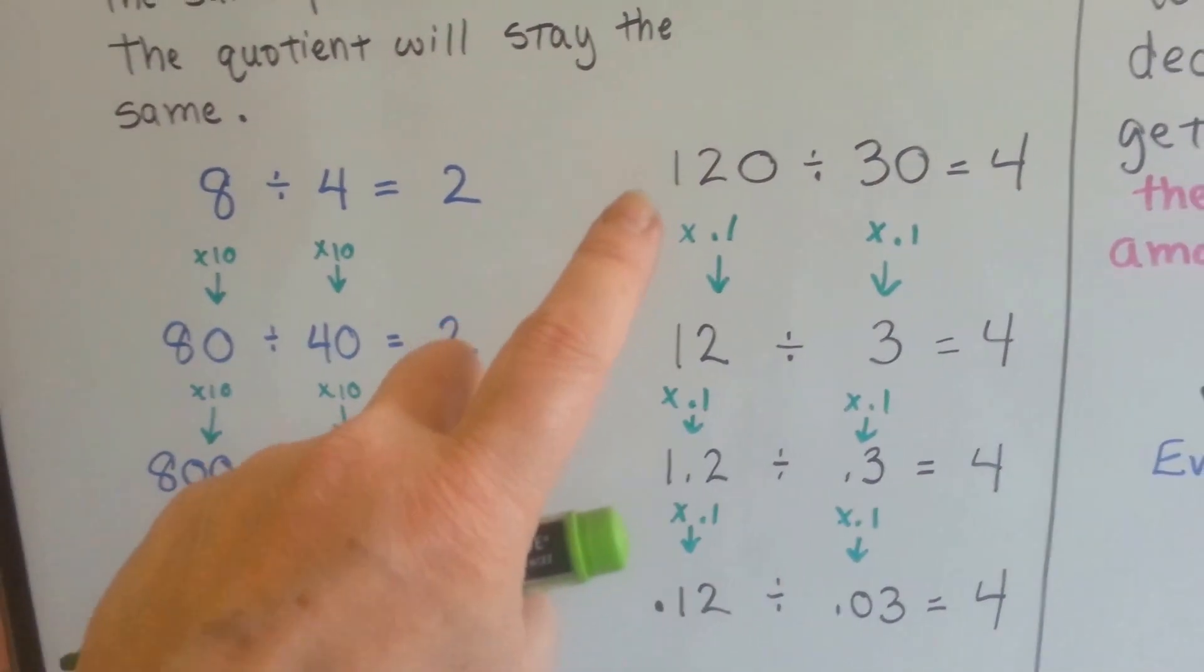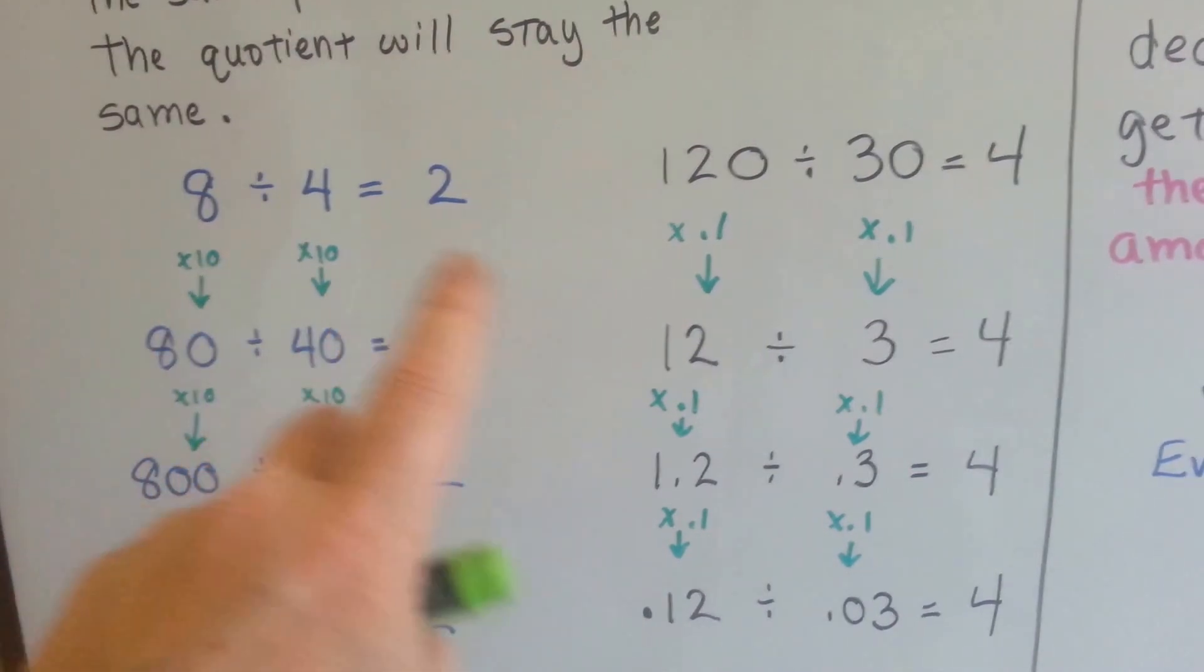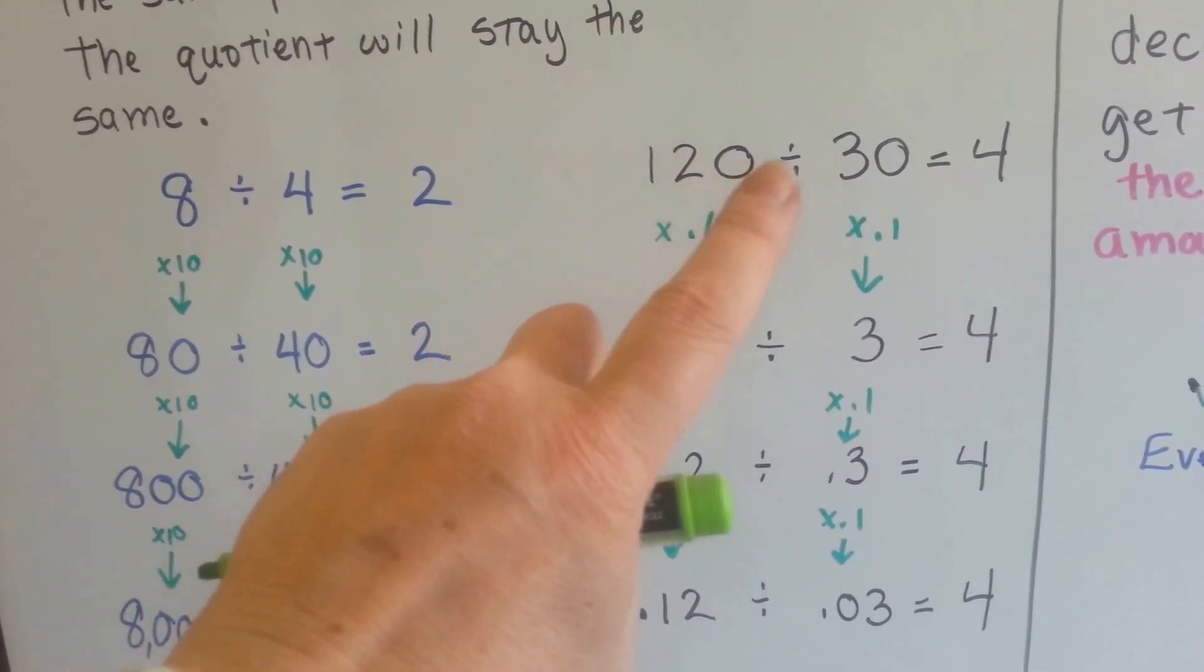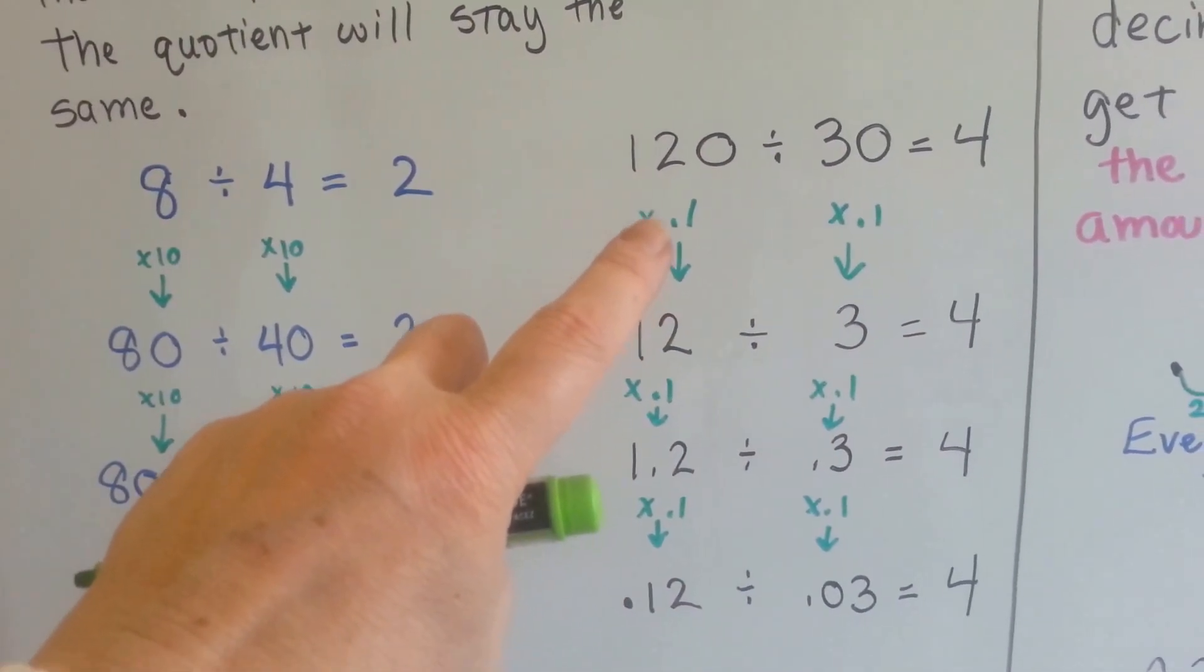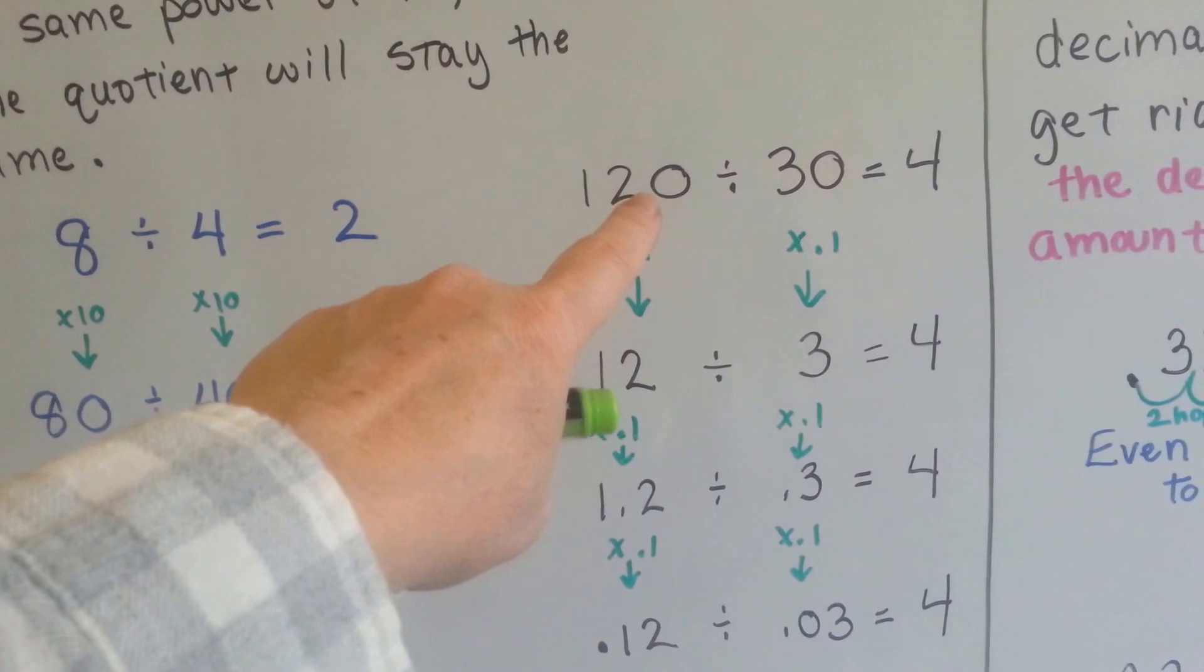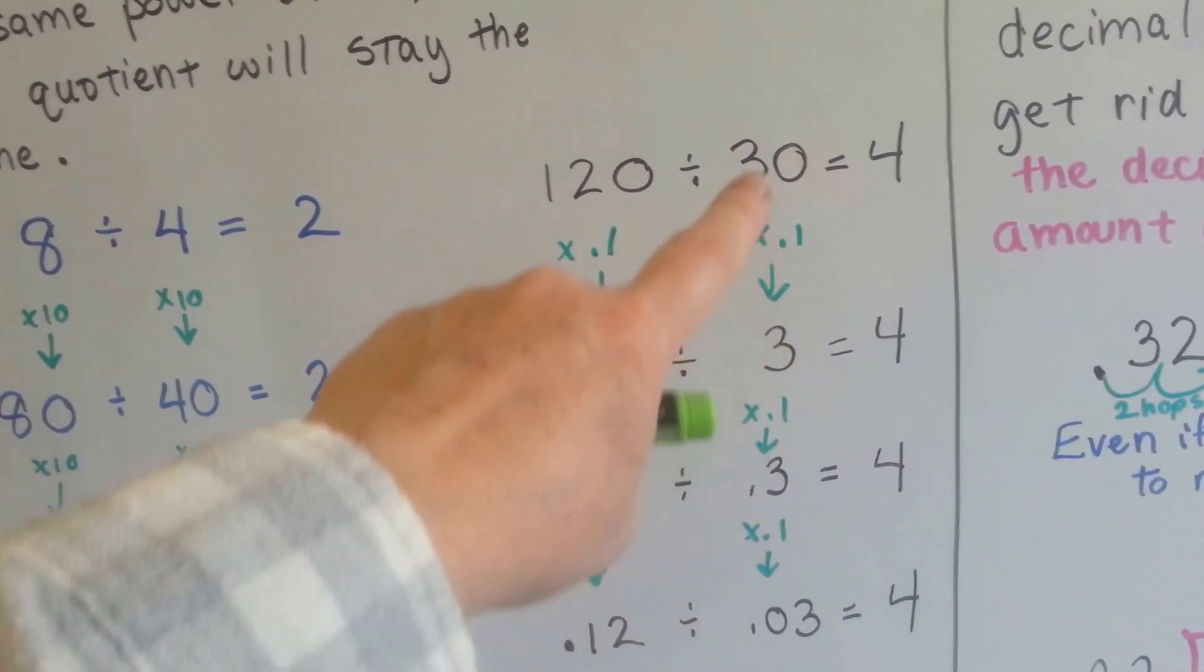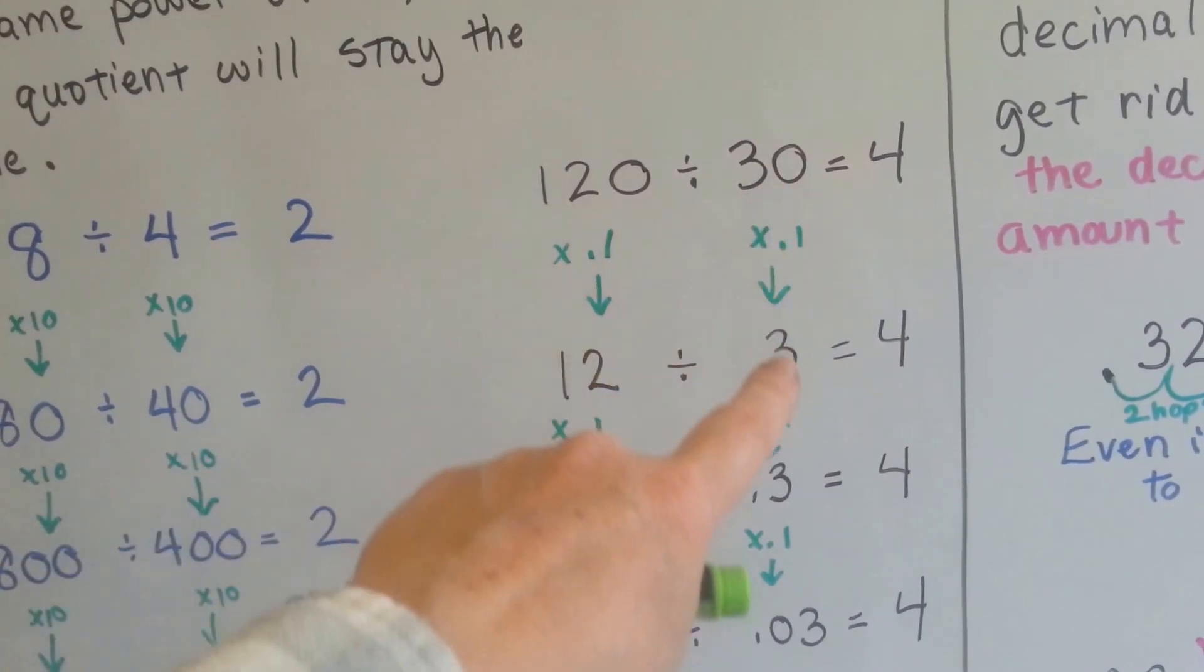Same thing when we do decimal points. So multiplying by 10, we can also multiply by tenths. 120 divided by 30 is 4. If we move the decimal point by multiplying by a tenth, we're going to move the decimal point from behind the zero to in front of the zero, so now we have 12 divided by 3. See? The decimal point was moved from behind the zero to in front of the zero and it became a 3.